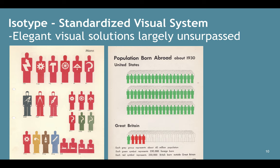One of the best parts about isotypes is that it's a very elegant visual solution that largely remains unsurpassed. As you see on the left, there are a bunch of laborers — these people are the same size, and the only difference is the icon within them. For example, the second from the upper left has a gear, so the person is most likely an engineer. The people in the middle have a measuring device — most likely some kind of mathematician. On the right, with population born abroad, you can compare numbers based on the figures depicted in green and red, comparing the US and Great Britain.